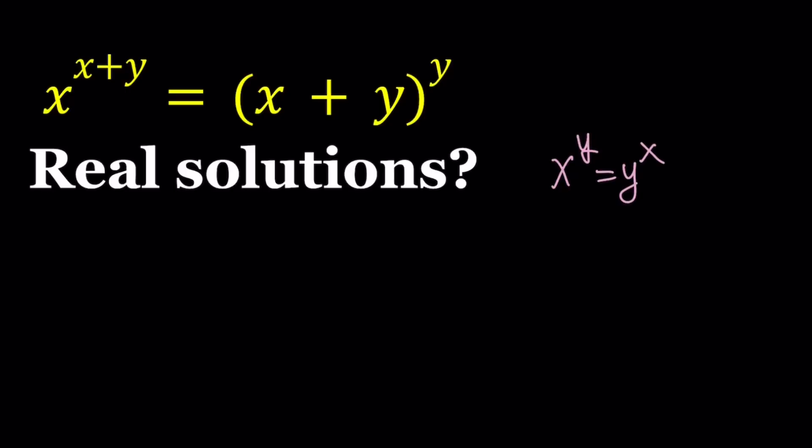For these kinds of equations we can use a generic method which is replacing y with something like k times x. K is just another variable or a parameter. So I'm going to go ahead and replace y with kx.